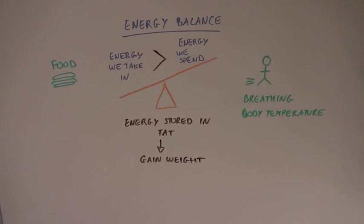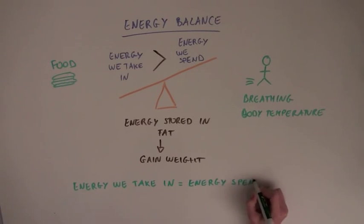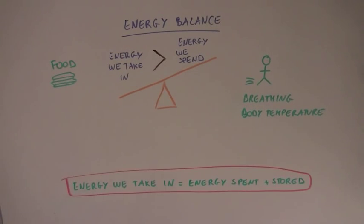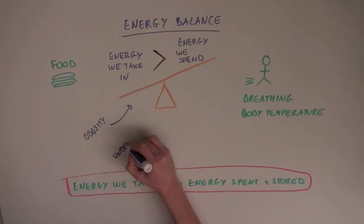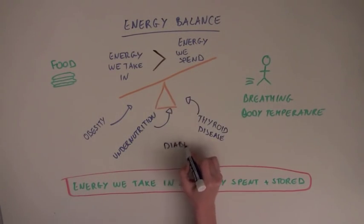So we can write this equation. The energy we take in, in the form of food, is equal to the energy that we spend, and whatever is not spent is stored. There are many things that affect energy balance, such as obesity and undernutrition, but also thyroid disease and diabetes, among many others.